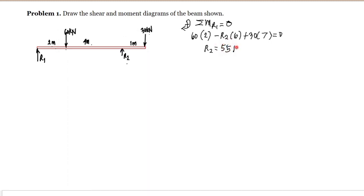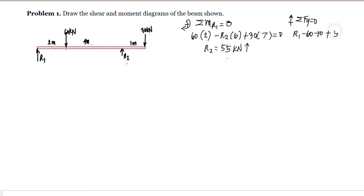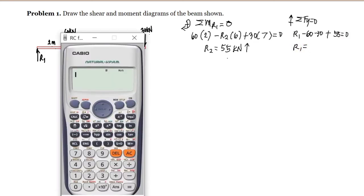Since R2 is positive, the assumption that R2 is directed upward is correct. To find R1, we use the summation of vertical forces equal to zero, taking upward as positive: R1 minus 60 minus 30 plus R2 (which is 55 kN) equals zero. Solving: R1 minus 90 plus 55 equals zero, giving us R1 equal to 35 kilonewtons.